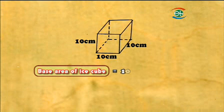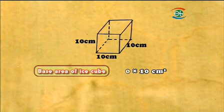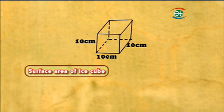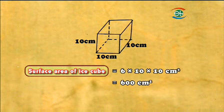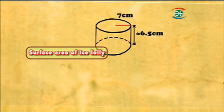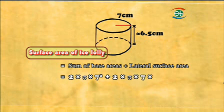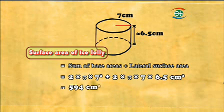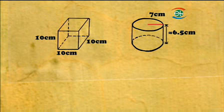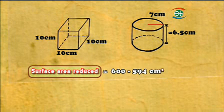The base area of the cube equals 10 times 10, which gives 100 square centimetres. As the base area equals the lateral surface area, the total surface area of the cube equals 6 times the base area — in other words, 6 times 100, which equals 600 square centimetres. The surface area of the ice lolly equals 2 times pi times 7 squared plus 2 times pi times 7 times 6.5. After this calculation, the surface area of the ice lolly is about 594 square centimetres. Therefore, when the ice cube is turned into the ice lolly, the surface area is reduced by about 6 square centimetres.